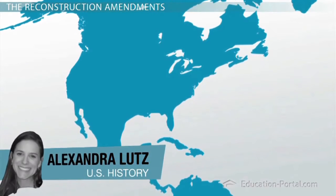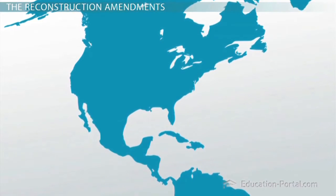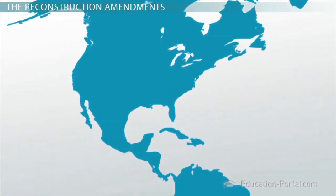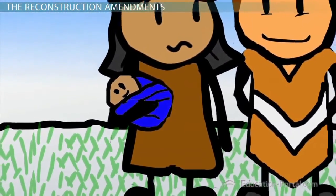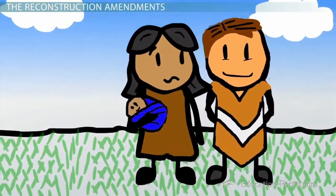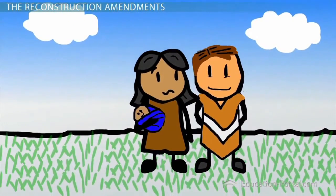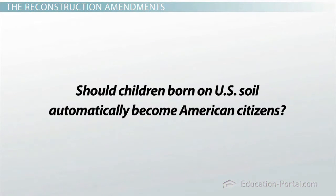On October 17, 2006, the population of the United States hit 300 million. According to demographers, the famous baby was a little boy, born in Los Angeles County, to Mexican parents. The Fourteenth Amendment to the Constitution granted this little one citizenship at birth. But his heritage, not to mention the illegal status of his parents, brought to light a politically charged question: Should children born on U.S. soil automatically become American citizens?